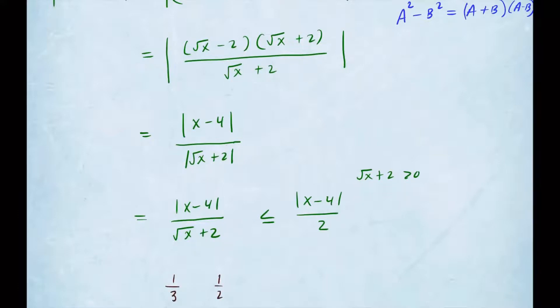If the denominator is growing, then overall the fraction value is going to be lower, so we know this is less than that. That's why I choose that inequality. I know that the left side is strictly less than or could be equal to absolute value of x minus 4 divided by 2.